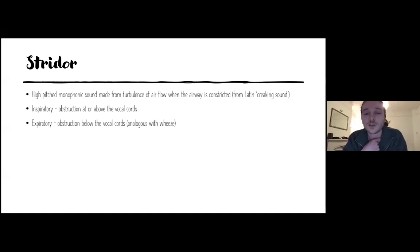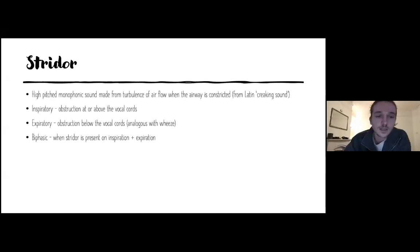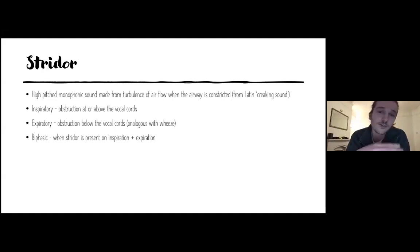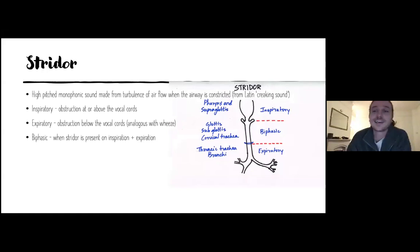There's also an expiratory stridor, which occurs with obstruction below the cords — analogous with a wheeze. We're less worried about that because you've got many more divisions of the airways lower down, so obstruction there is less concerning compared to a single upper airway. Then you have biphasic stridor, which is present on both inspiration and expiration. The sound of stridor is like windscreen wipers on a car with no water — it's one of those sounds that just scares everyone as soon as you hear it.